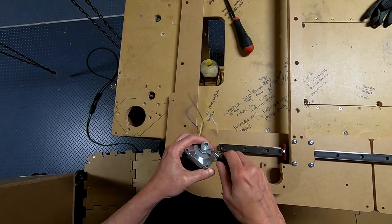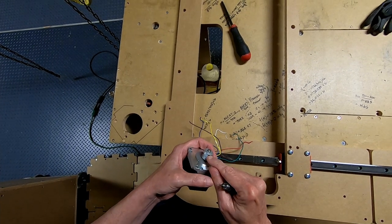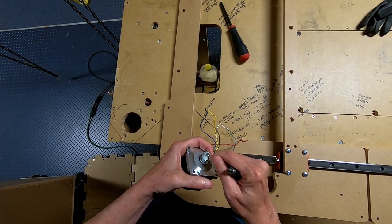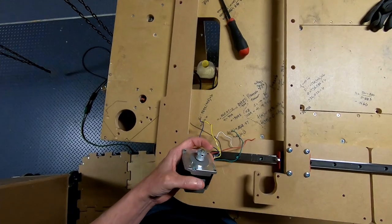You can use some Loctite blue to keep the set screws in and also maybe some glue with the shaft mating with the drive pulley, the hub.